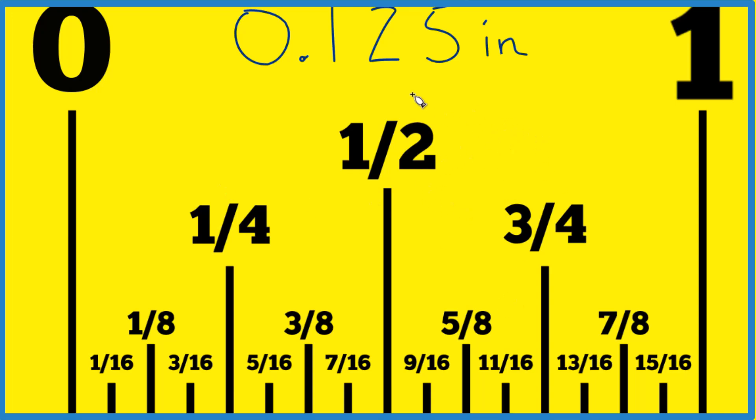And really what we need to do is we need to get this as a fraction here so we can find it on the ruler. Probably the best way is just to consider 0.125 over 1 because now we have a fraction. But we need to get rid of the decimal point.